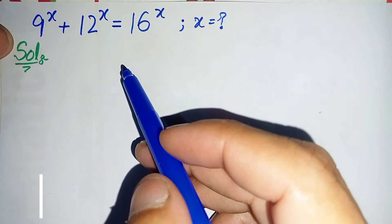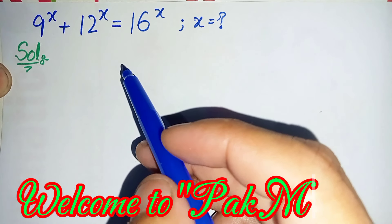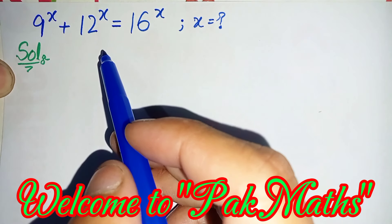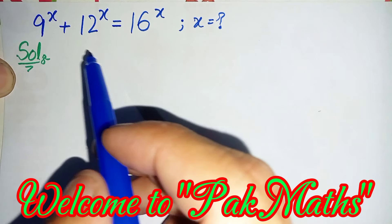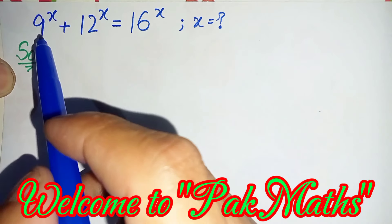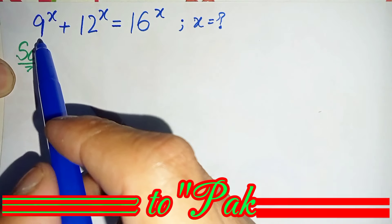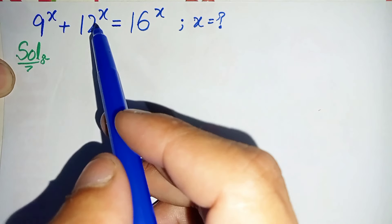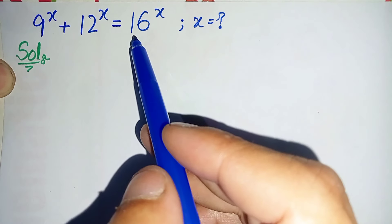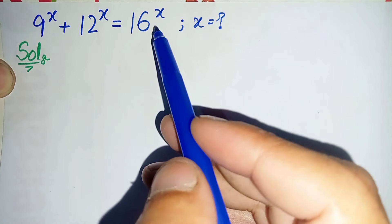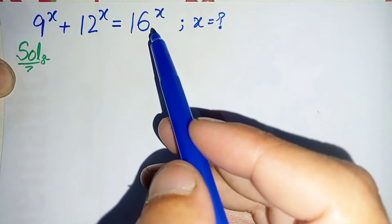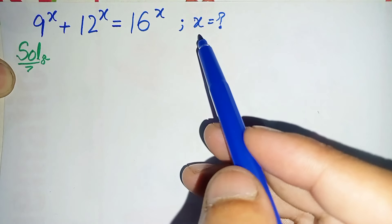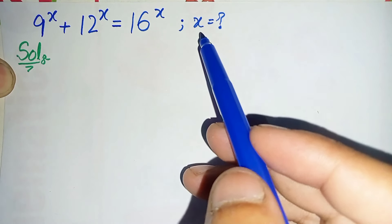Hello everyone, welcome to ParkMaths. How to solve this interesting exponential equation? That is 9 raised to power x plus 12 raised to power x is equal to 16 raised to power x. So here we will try to find x.